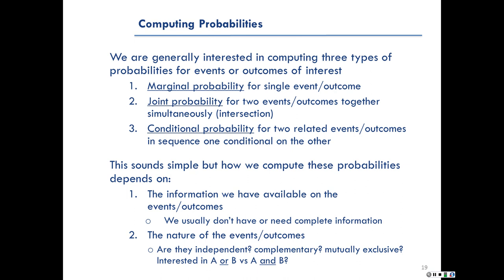When it comes to computing probabilities, we're generally interested in three types. The first is the marginal probability for a single event or outcome. The second is the joint probability for two events or outcomes together simultaneously. And then the third is the conditional probability for two related events in sequence, one conditional on the other.